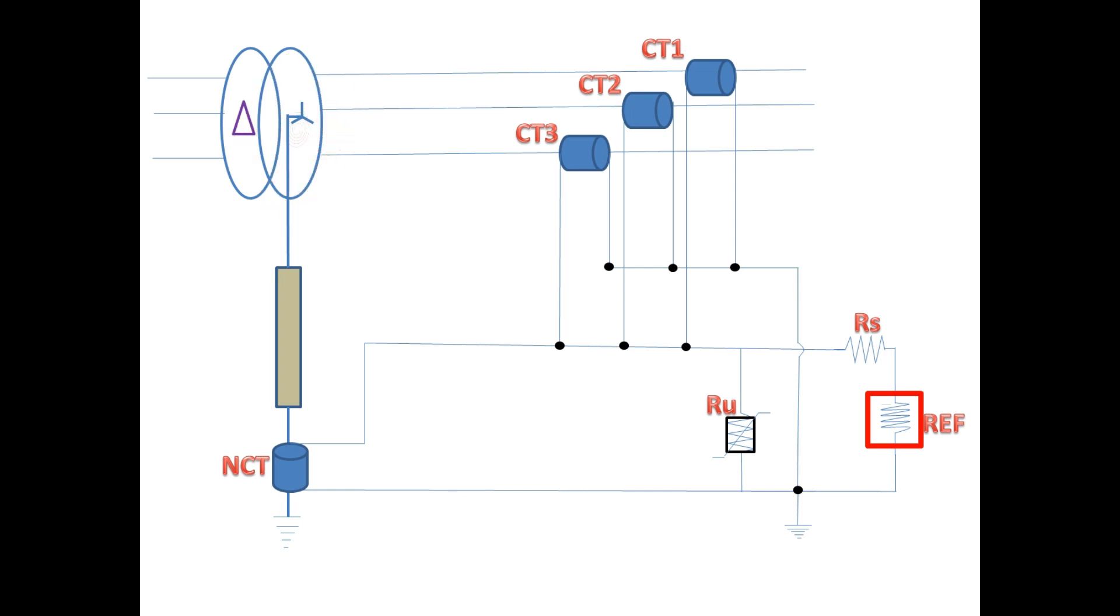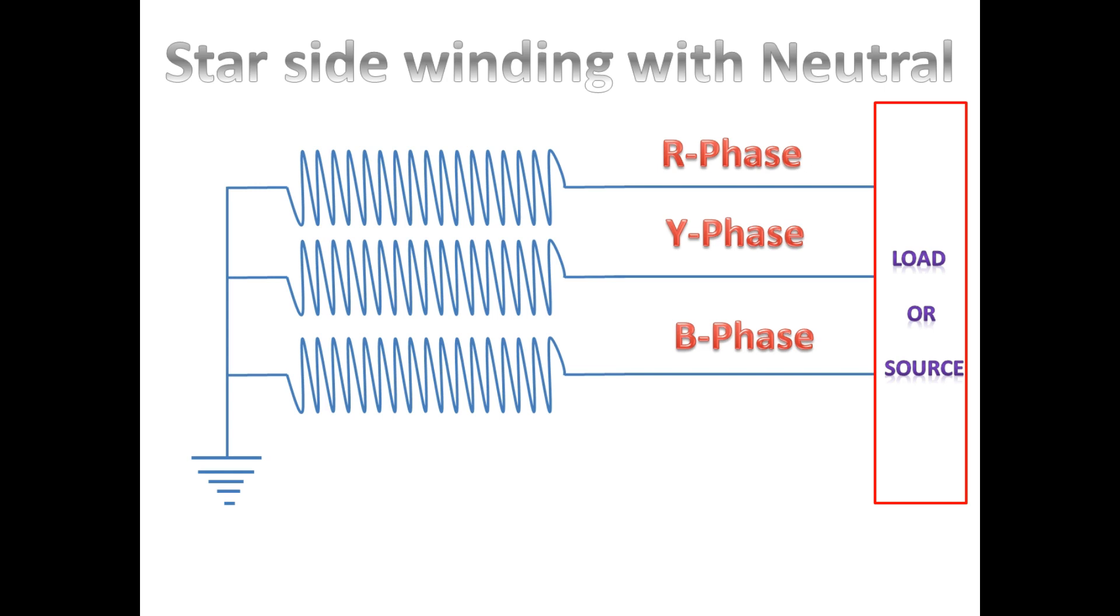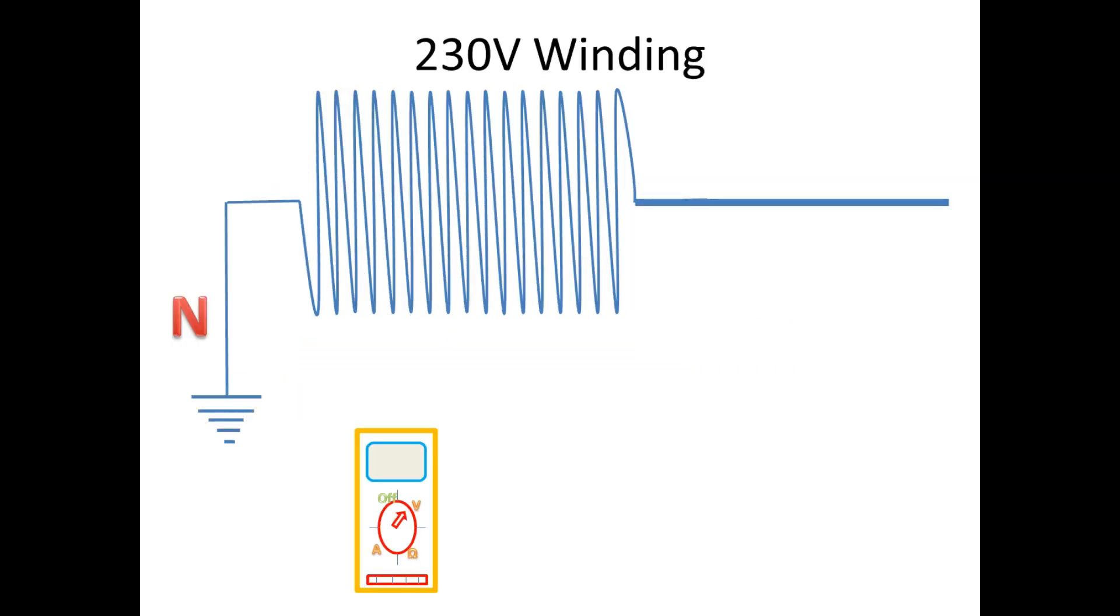On this winding, I am going to consider it's a 230V transformer. I am going to take any one winding only for clear understanding. When the transformer is connected to power supply, if we measure the voltage from neutral point to phase end, we will get the full voltage.